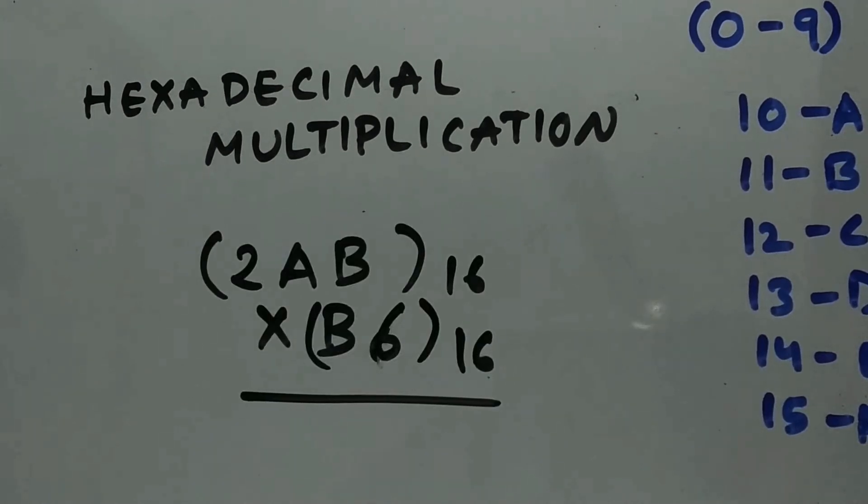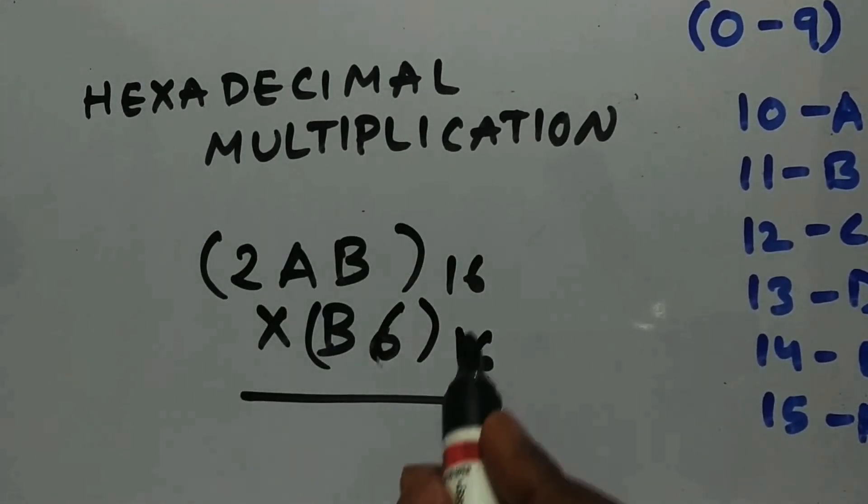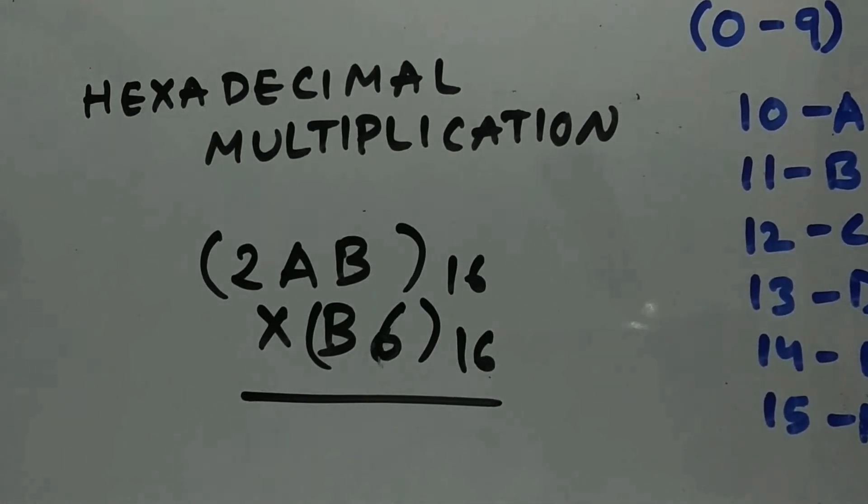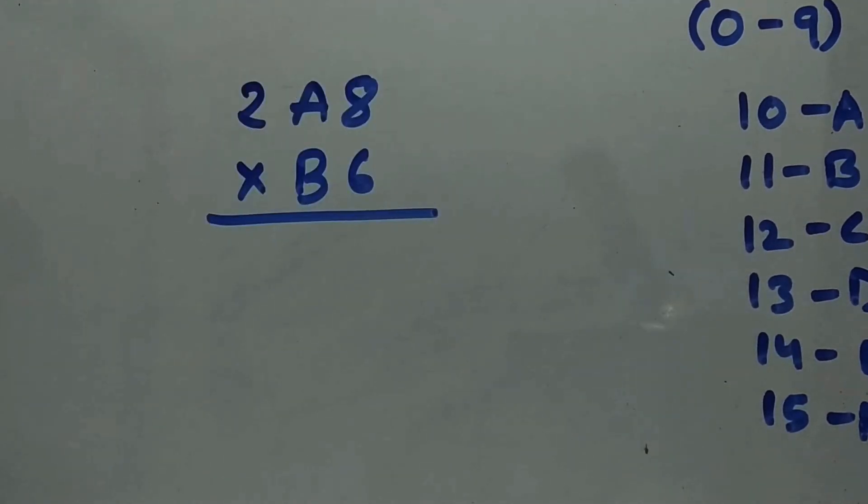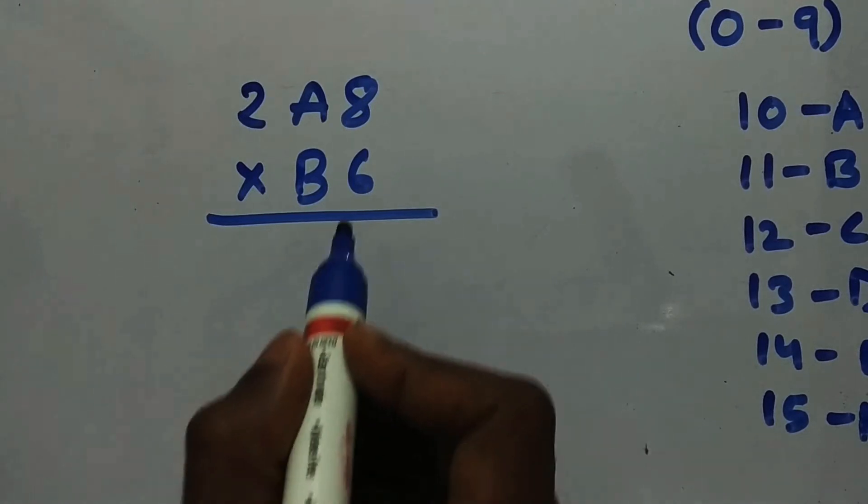I'm going to take a simple example: 2AB base 16 times B6 base 16. For this multiplication you need hexadecimal addition. If you don't know hexadecimal addition, go check my previous video. Let's go for this multiplication. We need to multiply these two numbers as normally like we do in decimal.